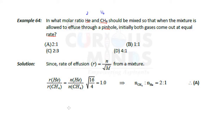Let me write over here. This is n of He into molecular weight of CH4, which is 16, upon n of CH4 into molecular weight of helium, which is 4, and this is under square root. So you can see this is r of He upon r of CH4.